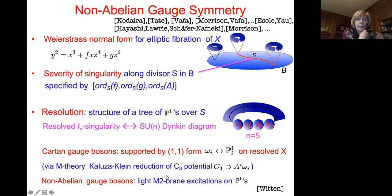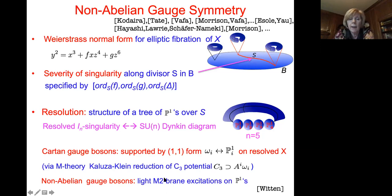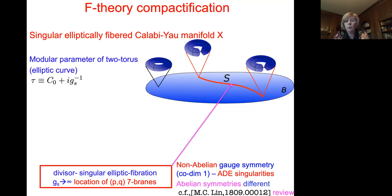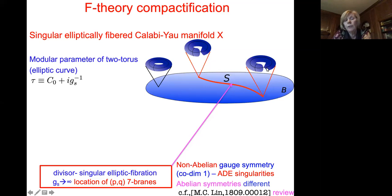This is deduced via Kaluza-Klein reduction through F-theory/M-theory duality. Non-abelian gauge bosons emerge as massless states from two-branes wrapping this tree of P1s when those P1s are shrunk. The origin of abelian gauge symmetry is different in F-theory compactification — it is associated with the Mordell-Weil group and sections on the elliptic fibration that produce divisors supporting U(1) gauge symmetry.